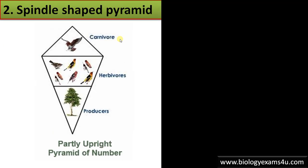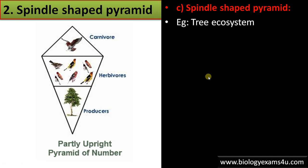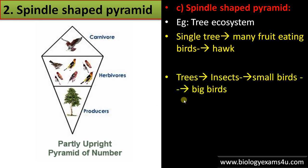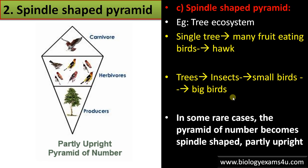The spindle-shaped pyramid forms in some cases — take the tree ecosystem: a single producer tree, many fruit-eating birds, preyed upon by an eagle whose numbers are comparatively less. Another example: trees, insects, small birds, and big birds — the number increases from trees to insects, then decreases for small birds and big birds. In such cases, the pyramid of number becomes spindle-shaped — partly upright and partly inverted.